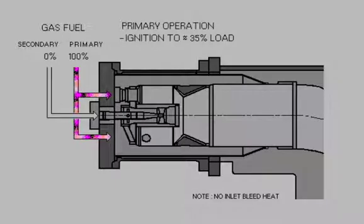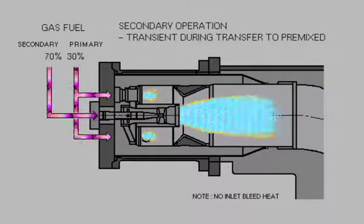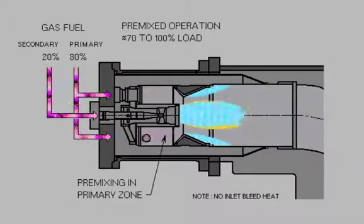In summary, a DLN-1 combustor has four operating modes from ignition to full load: Primary, lean-lean, secondary, and premix. Remember, good emissions performance is achieved in the premix mode of operation, where the fuel-air equivalence ratio is very lean.